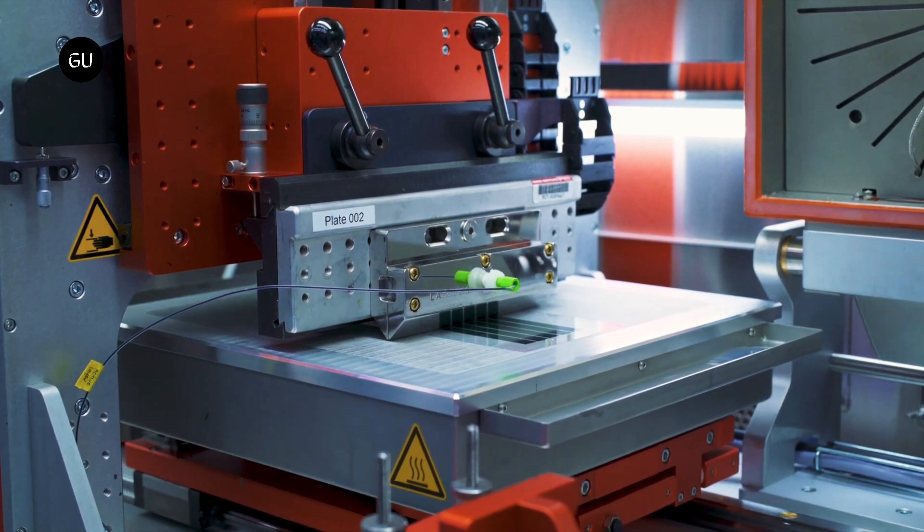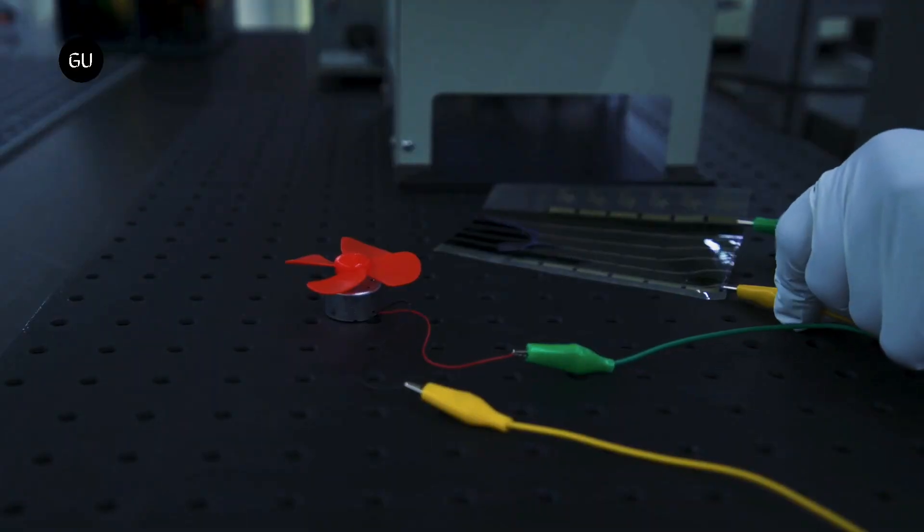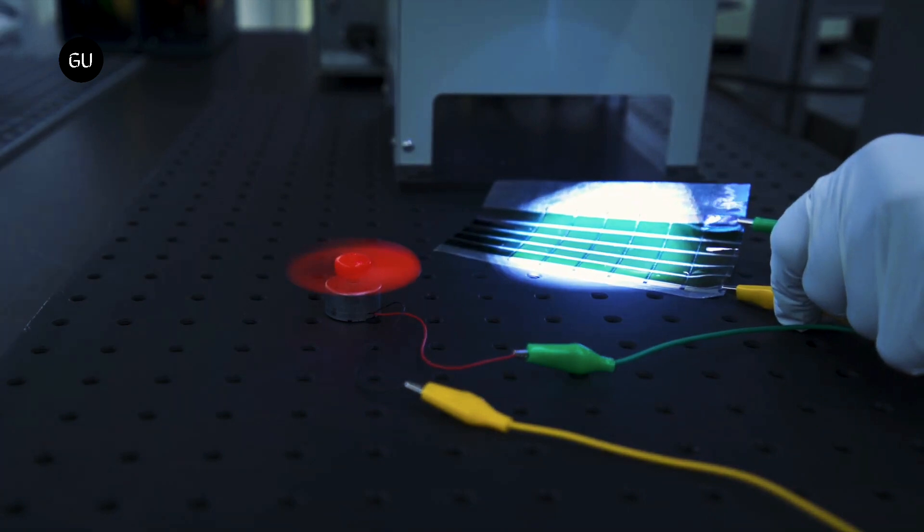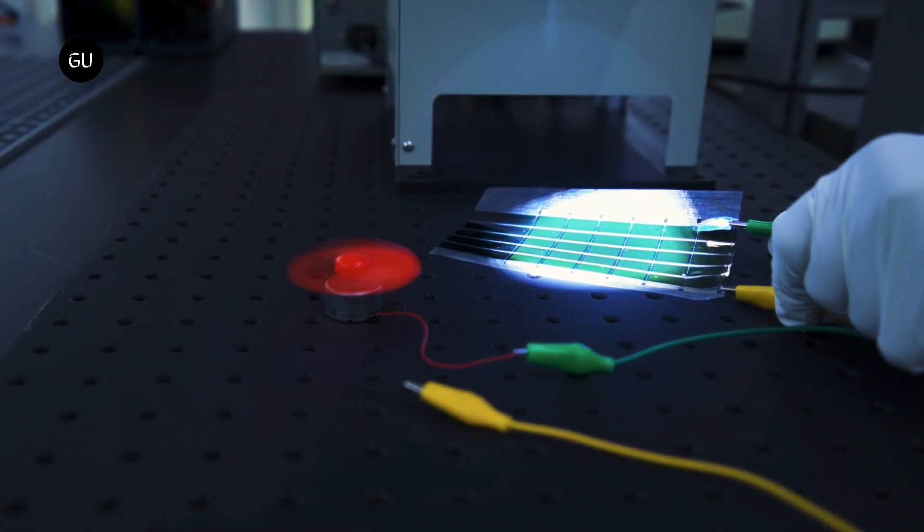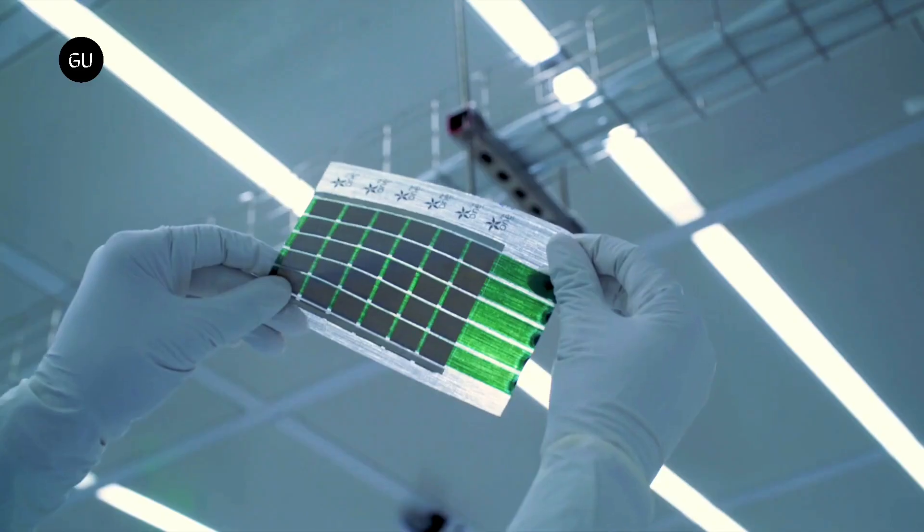When they tested the device, the researchers found it could generate 730 watts of power per kilogram when freestanding, and about 370 watts per kilogram if deployed on the high strength Dyneema fabric, which is about 18 times more power per kilogram than conventional solar cells.